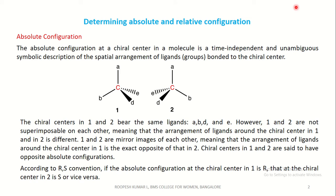Absolute configuration. The absolute configuration at a chiral center in a molecule is a time-independent and unambiguous symbolic description of a spatial arrangement of groups or ligands bonded to the chiral center. This is the chiral center, and A, B, D, E are the groups or ligands attached to it, and these 1 and 2 are enantiomers.